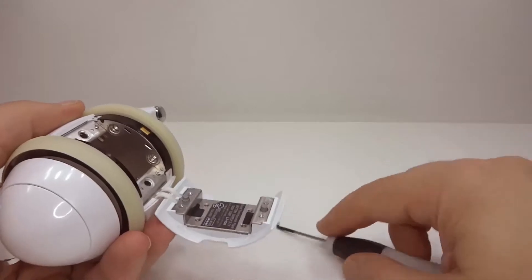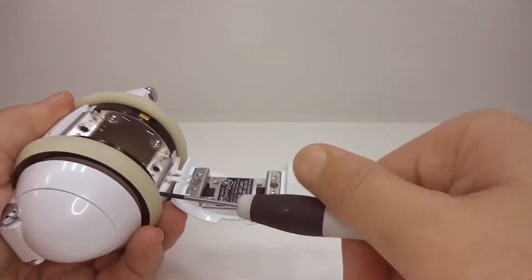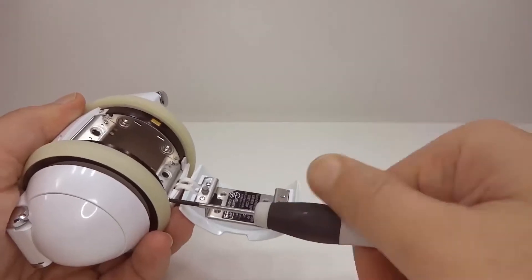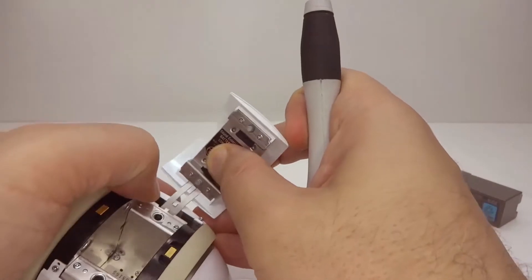We're going to take out the case screws first. See what we can do about removing the outside part. There we go, that's pretty good. Especially this heavy battery cover.